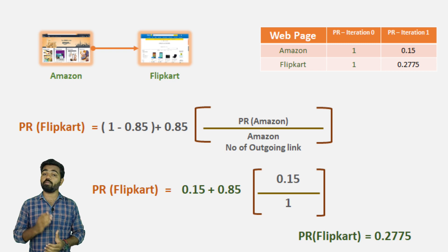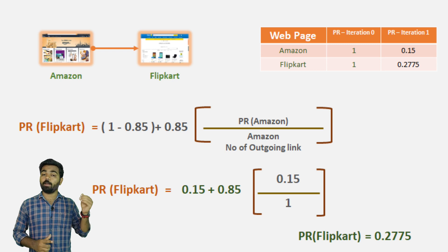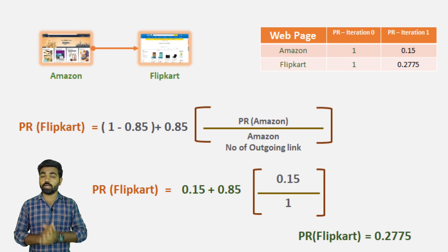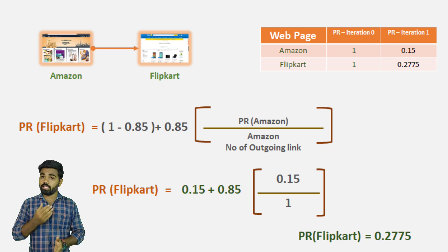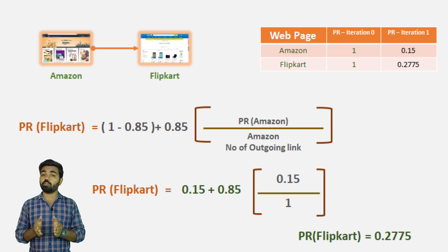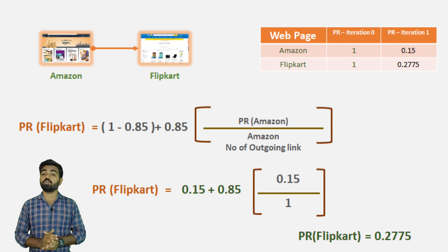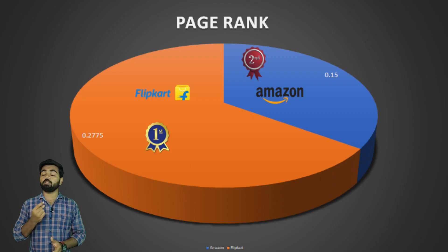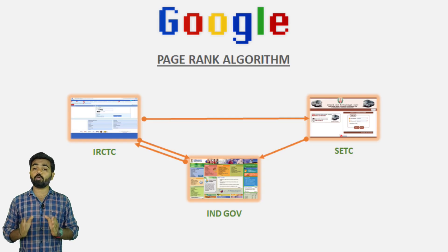We will find 0.15 for 1.00. So when we apply here, we will put the PageRank on Flipkart as 0.2775. Let's see here — we have 0.15. We don't have a link; we have the same page on Flipkart, so we have the same page rank of 2 for Flipkart.